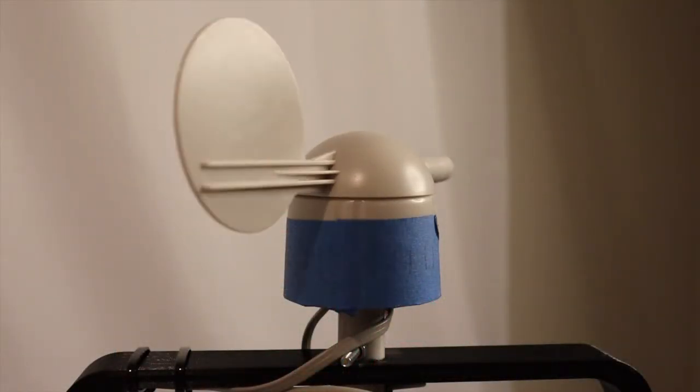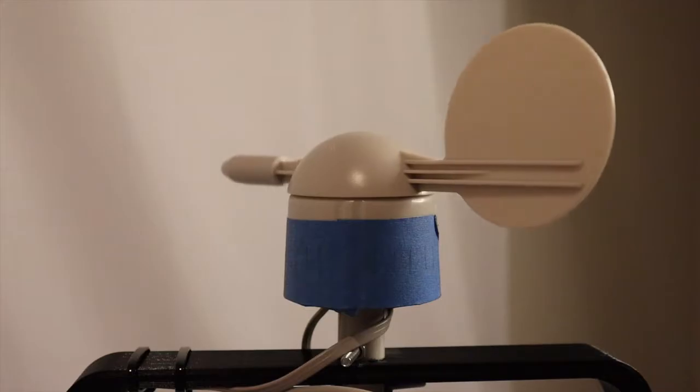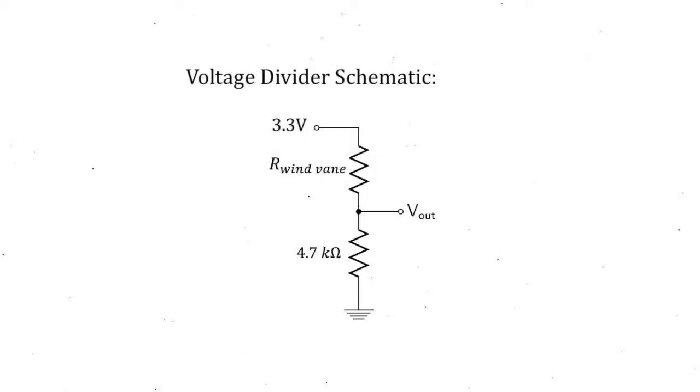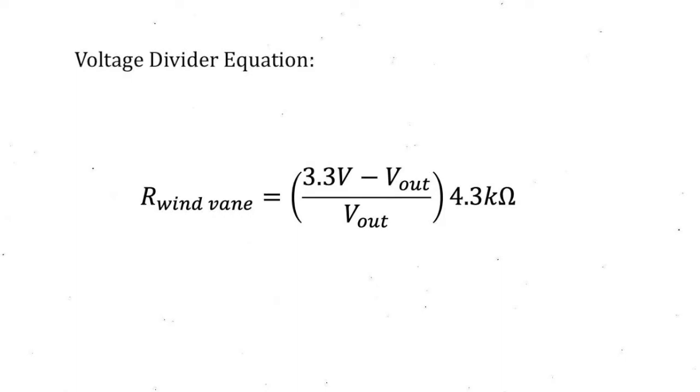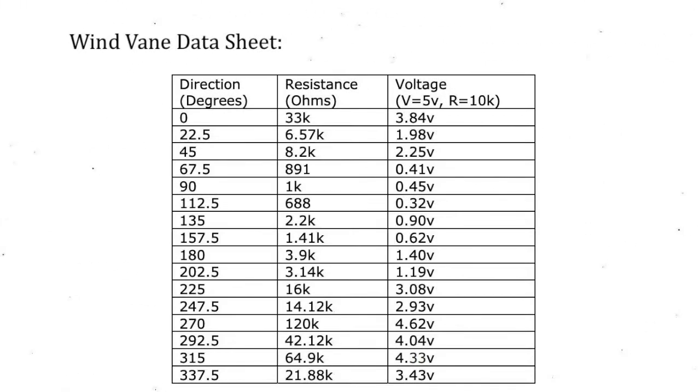This switches the corresponding resistor into a voltage divider circuit. The analog measured voltage is used to calculate the resistor and thus determine the corresponding wind direction.